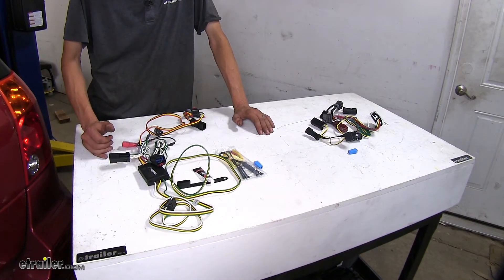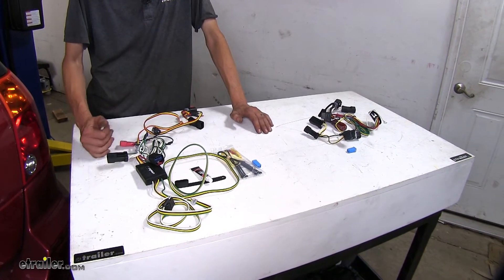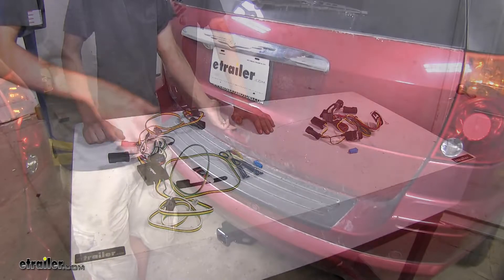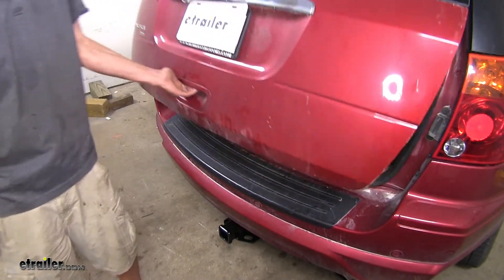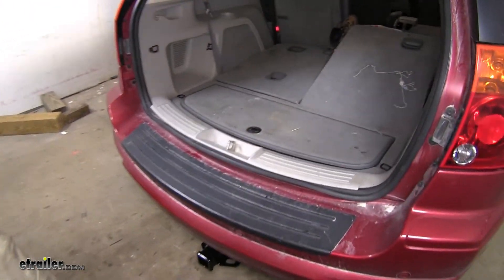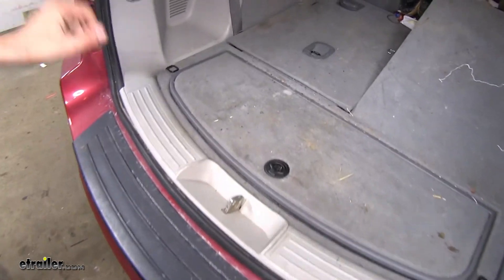We'll have our taillights, our running lights, our turn signals, and our brake lights. Both of our wiring harnesses also are designed to be stored inside the hatch of our vehicle when they're not in use.